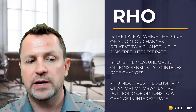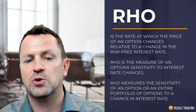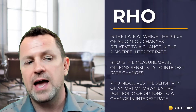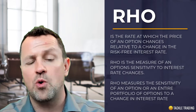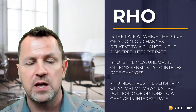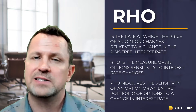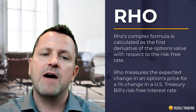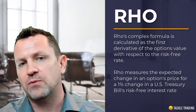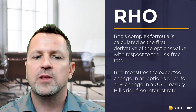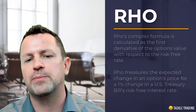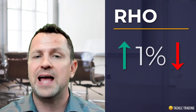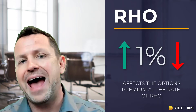That's at a 1% increment. Rho is the measure of an option's sensitivity to those interest rate changes, and Rho can also measure an entire portfolio of options to those changes in interest rates. Rho's complex formula is calculated as the first derivative of the option's value with respect to that risk-free rate. The risk-free rate we're talking about is U.S. Treasury bills. If those Treasury bills' interest rates were to change 1% up or 1% down, that's going to affect the option premium at the rate of Rho. They're considered risk-free interest rates because it's a U.S. Treasury bill, and the government in theory always pays on that bill.